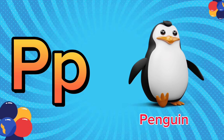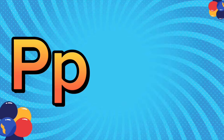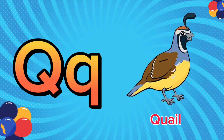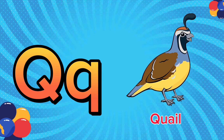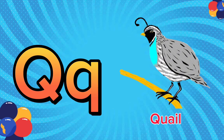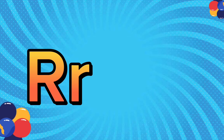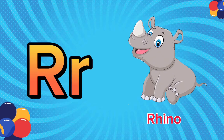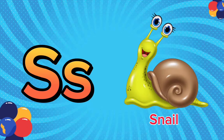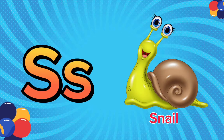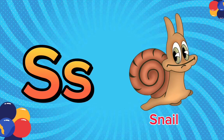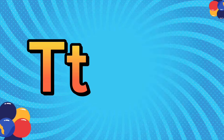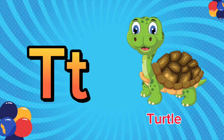P is for Penguin. P, P. Penguin, P is for Penguin. P, P. Q is for Quail. Q, Q. Quail, Q is for Quail. Q. R is for Rhino. R, R. Rhino, R is for Rhino. R, R. S is for Snail. S, S. Snail, S is for Snail. S, S. T is for Turtle. T, T. Turtle, T is for Turtle. T, T.